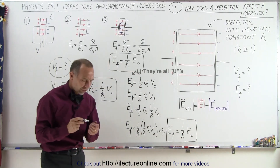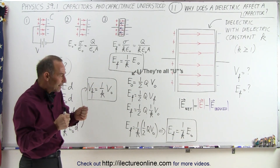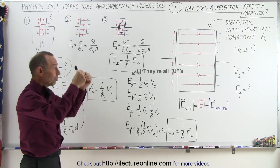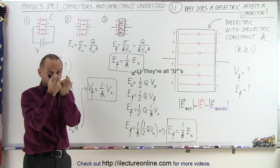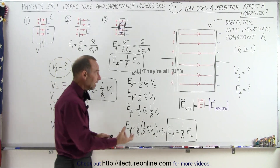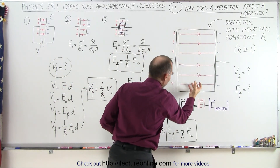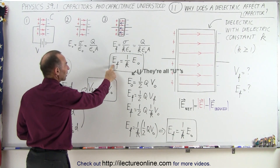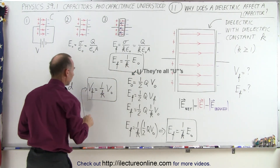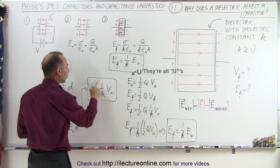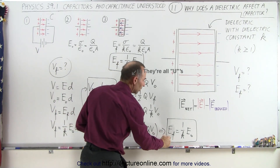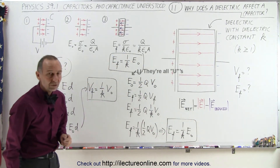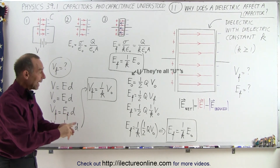That's an interesting concept, because if the final energy is less than the initial energy, it doesn't require work to insert the dielectric — the dielectric will basically be pulled in. You don't have to push any force into it; the dielectric, once you place it at the edge, will get pulled into between the capacitor plates. The result is that the final electric field is one over k times the initial electric field, the voltage between the plates equals one over k times the initial voltage, and the energy stored in the capacitor is one over k times the original energy.